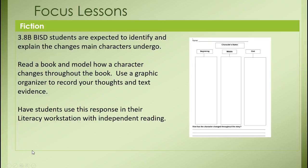In fiction, you're expected to identify and explain the changes main characters undergo. Read a book and model how a character changes throughout the book. Use a graphic organizer to encourage your thoughts and text evidence — thinking about a character in the beginning, middle, and end, and what's the text evidence to show why they changed. Have students really show evidence in the text of how they understood what the character was saying. You could use this graphic organizer in a workstation.